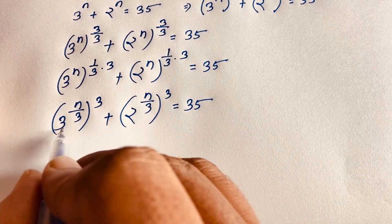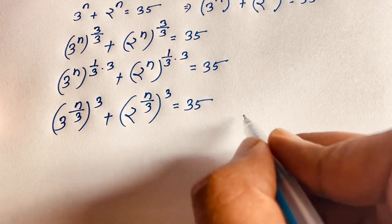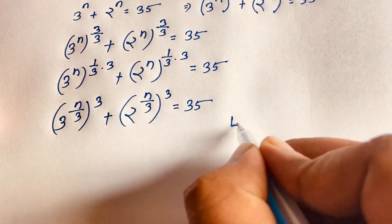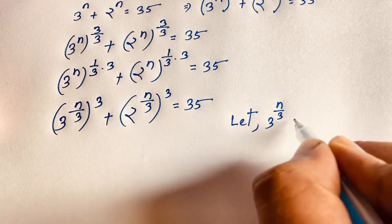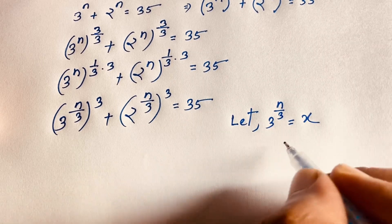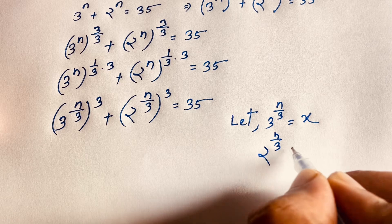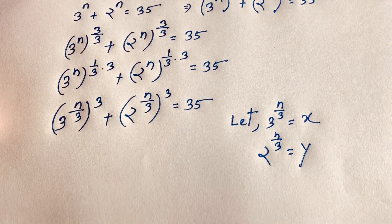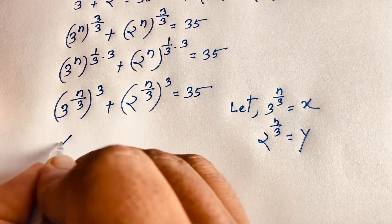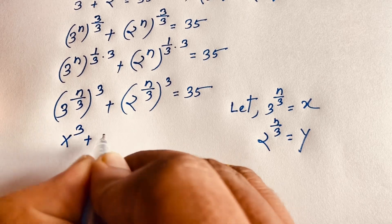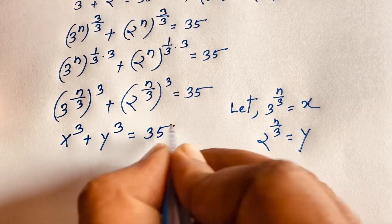Now let x = 3^(n/3) and y = 2^(n/3). At this moment we can write the equation as x³ + y³ = 35.